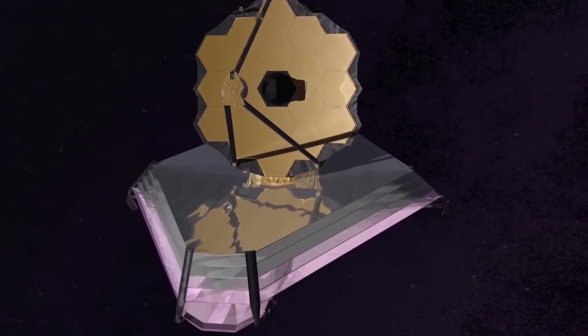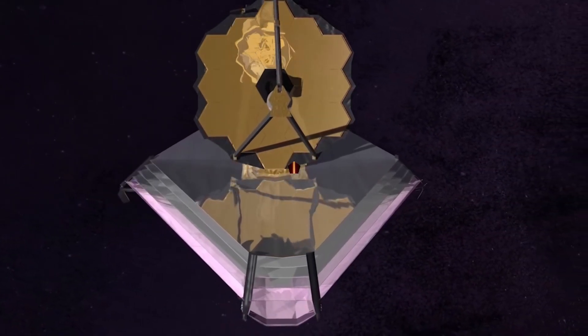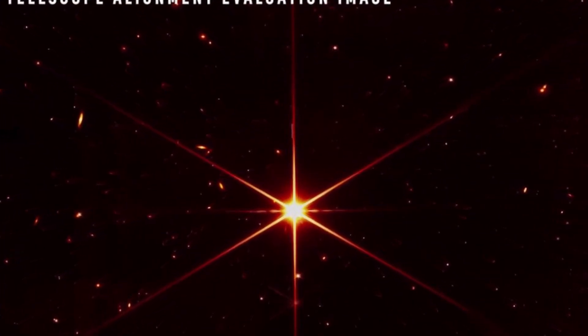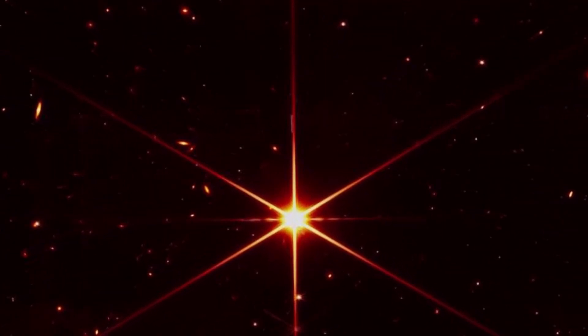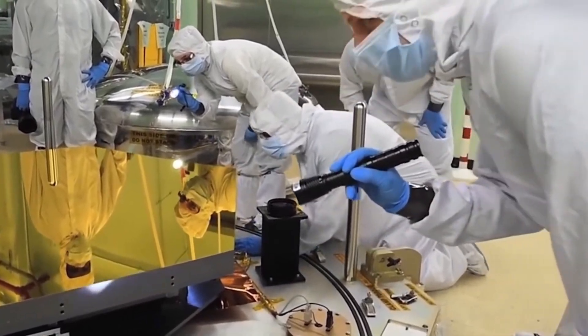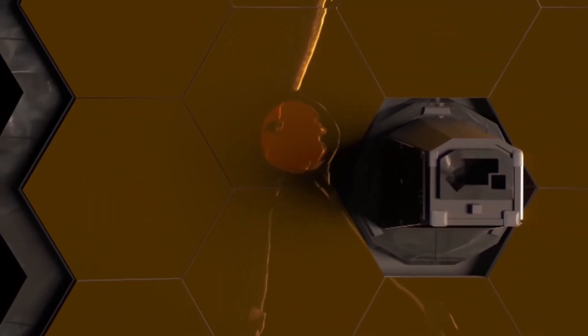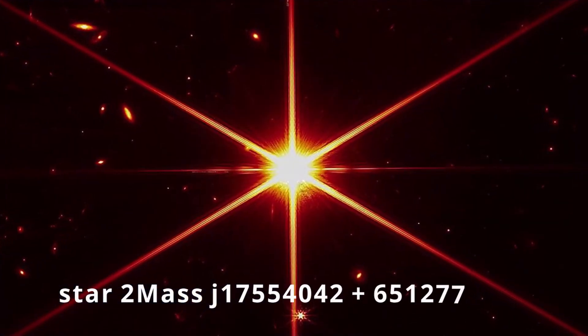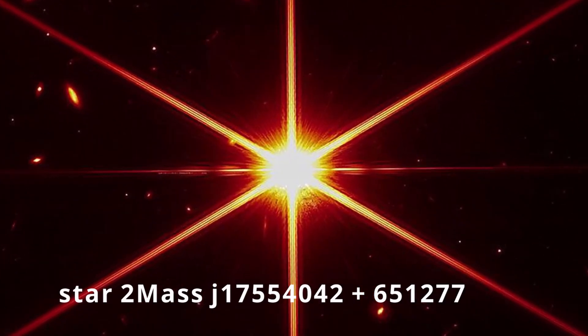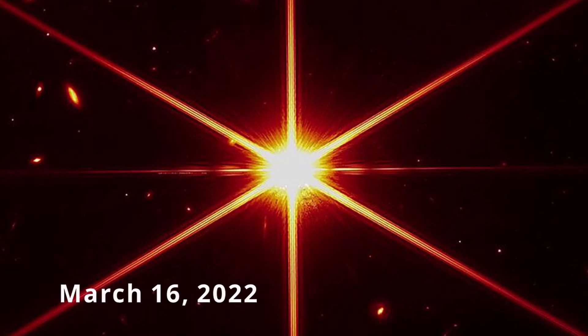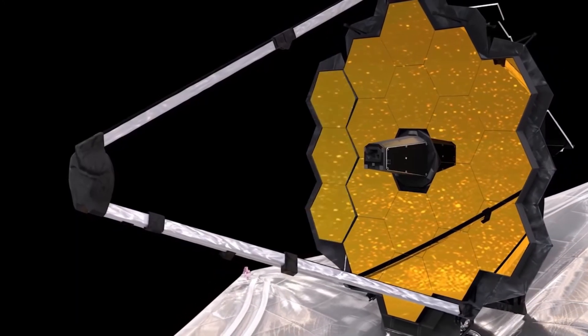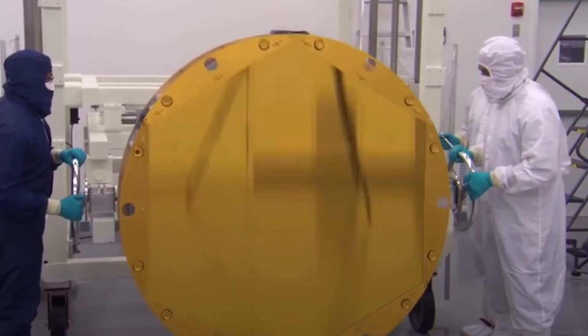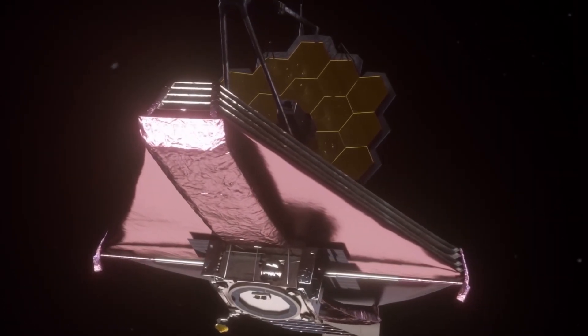A few weeks later, the JWST captured another image of the same celebrity. The distinction was obvious. On March 11, NASA finished focusing on the primary mirror of the James Webb Space Telescope. The outcome was more precise than anyone could have imagined. You can view the breathtaking photo of the star 2 mass J17554042 plus 651277 that NASA released on March 16, 2022. The image was noteworthy because it demonstrated that each of the 18 primary mirror segments on the JWST was precisely aligned by NASA scientists.